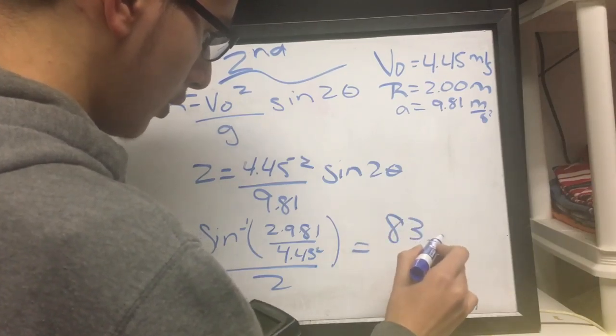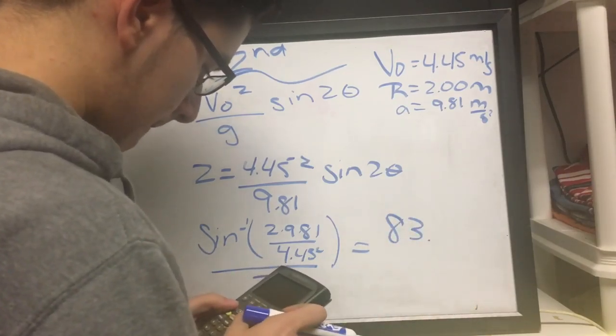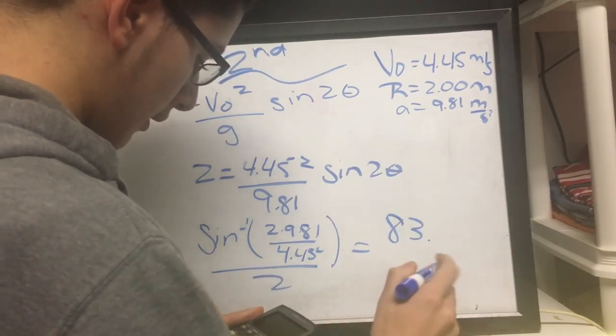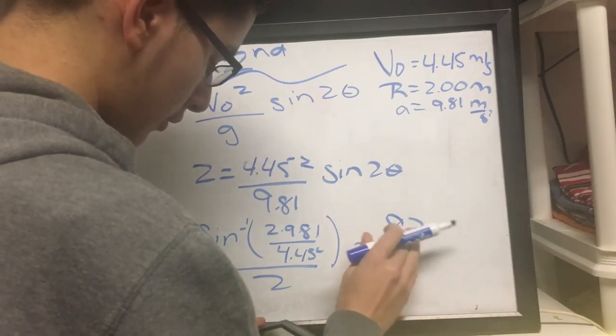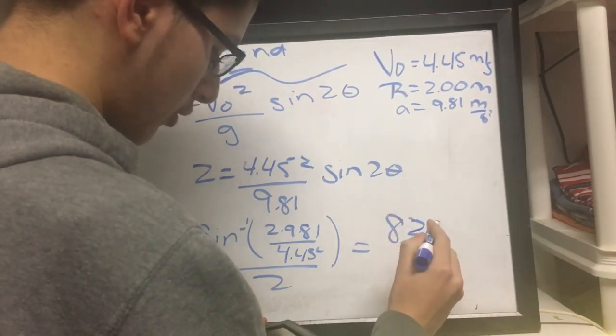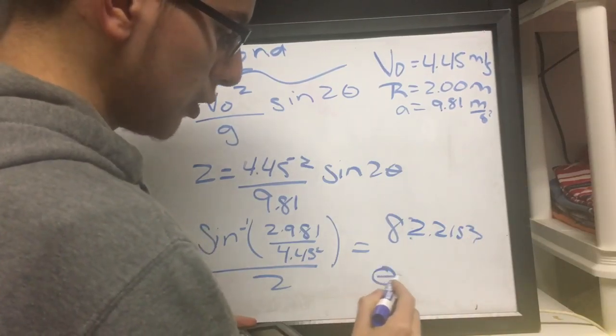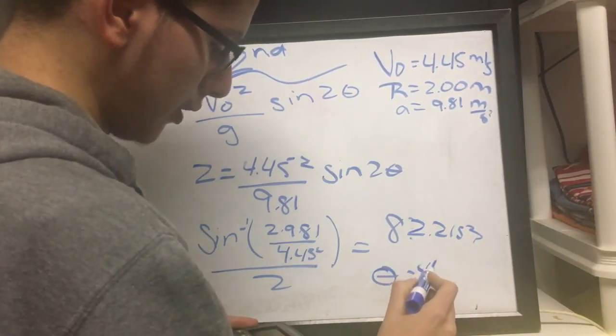So now your inverse sine would equal 2 times 9.81 all over 4.45 squared all divided by 2, which would be 83 point, or it would be 82.2153. So the angle that you would need to launch it at would be at 41 degrees.